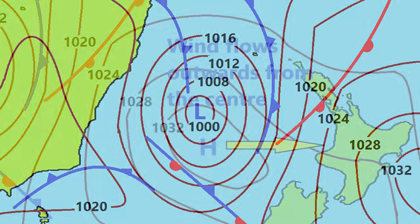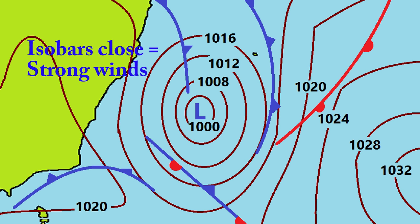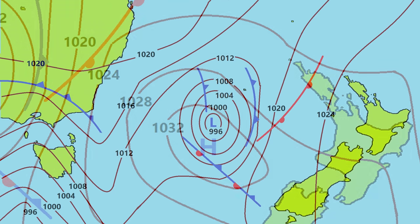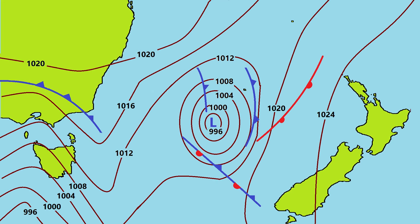Generally, wind flows towards the centre of low pressure systems and away from high pressure systems. When isobars are close together, wind is strong; when isobars are far apart, wind is weak. Now it is time to go and read some weather maps and see if you can interpret them.